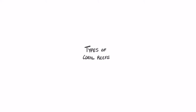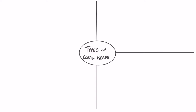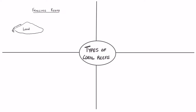In this lesson we're going to look at the different types of coral reefs. The first one we'll take a look at are fringing reefs. Fringing reefs grow near the coastline, around small islands and continental land masses, wherever there is a hard surface.